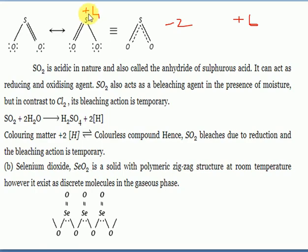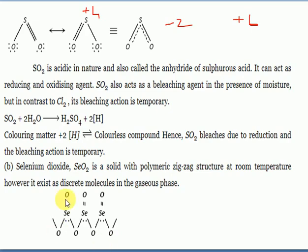Sulfur dioxide has a +4 oxidation state and acts as both an oxidizing agent and a reducing agent - sulfur can gain electrons to reach −2 or lose electrons to reach +6, and +4 is intermediate. Sulfur dioxide is also called the anhydride of sulfurous acid. When SO₂ reacts with water, it forms sulfurous acid. Selenium dioxide is a solid with a polymeric zigzag structure.